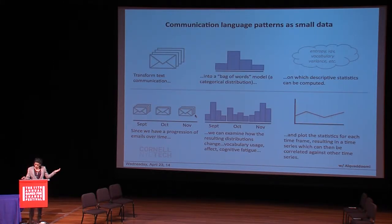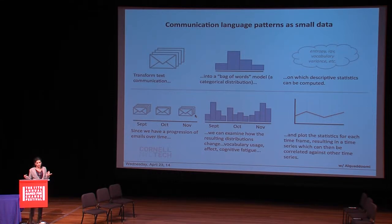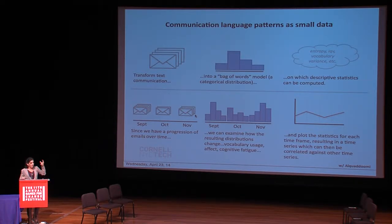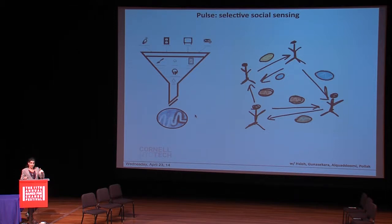Our language is another example of something that contains a lot of content about how we're doing day-to-day, week-to-week, what our state of mind is, what our cognitive performance level is. It's also a good example of when, if you think about sharing it in the raw, there's way too much information. We want to be able to process it in smart ways and pull out interesting patterns. An application prototype we're exploring, based on a combination of the language we utter as well as physical activity and location patterns — think about data from a Moves application — is something called Pulse.